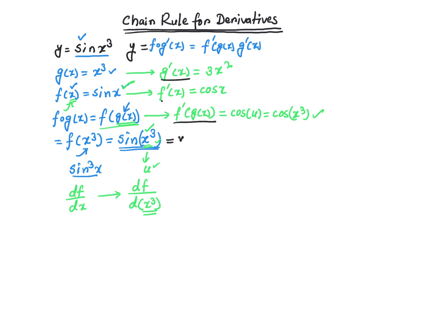So I can write it as y. The derivative dy over dx is going to be equal to f prime of g of x, which is this value, cosine of x cubed, times the derivative g prime of x, which is 3x squared. So your answer should be this.